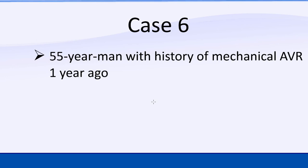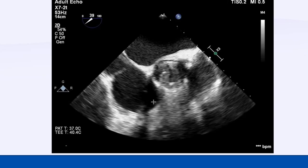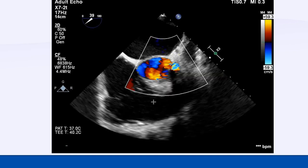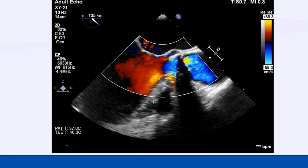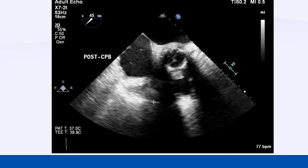The last case is a 55-year-old man with a history of mechanical AVR one year ago, a case from a couple of days ago. This is a mechanical aortic valve. I showed more mitral cases because paravalvular leak is more common in mitral. Here you can see the paravalvular leak, and this valve was replaced by a bioprosthetic valve.